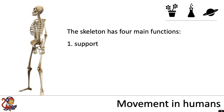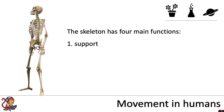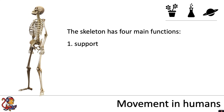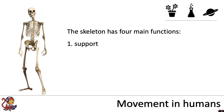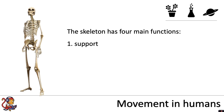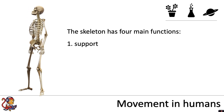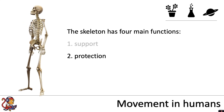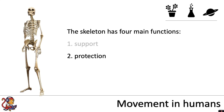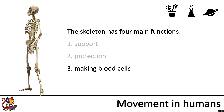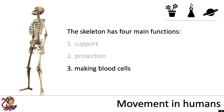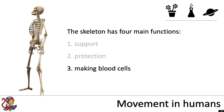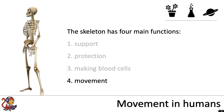The skeleton has four main functions. First, support — if we didn't have a skeleton, we would just be a blob of cells, tissues, and organs on the floor; we need a skeleton to support our upright posture. Second, protection — the skeleton protects our major organs; for example, the rib cage protects our lungs and heart. Third, making blood cells — some bones have bone marrow which produces red and white blood cells. And finally, movement.